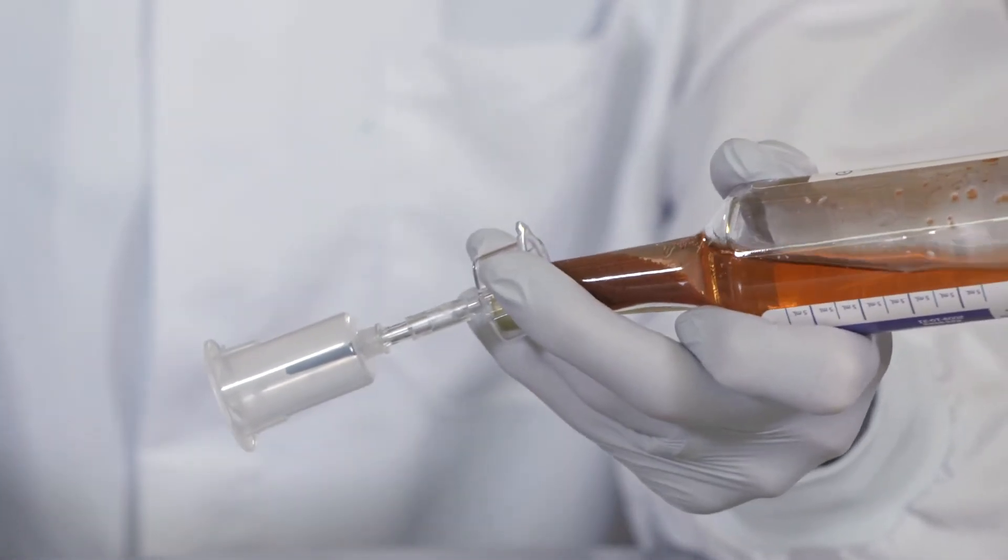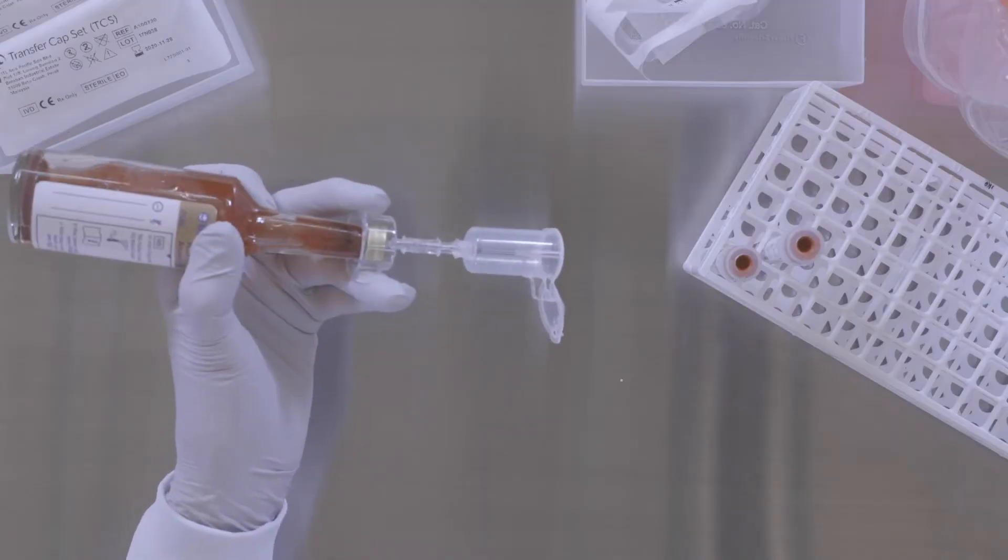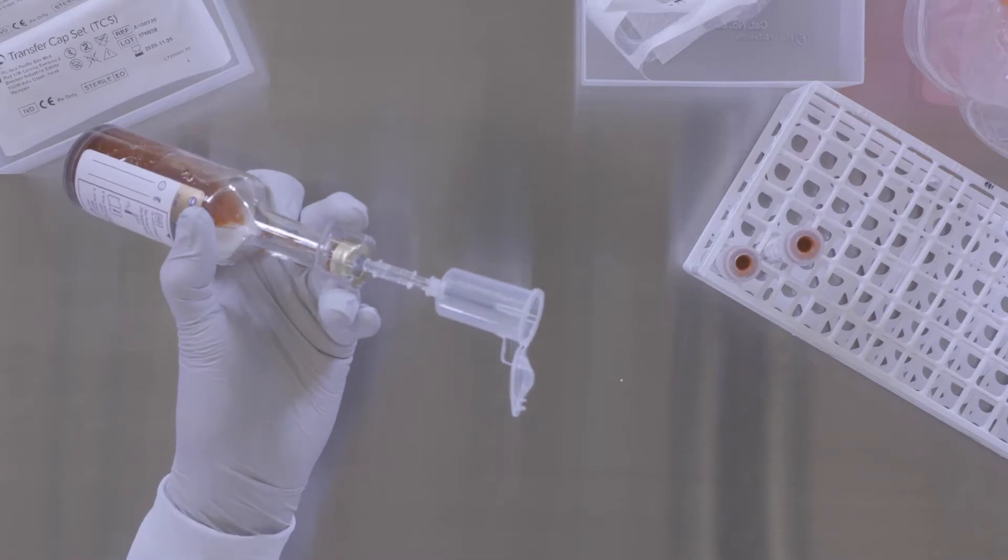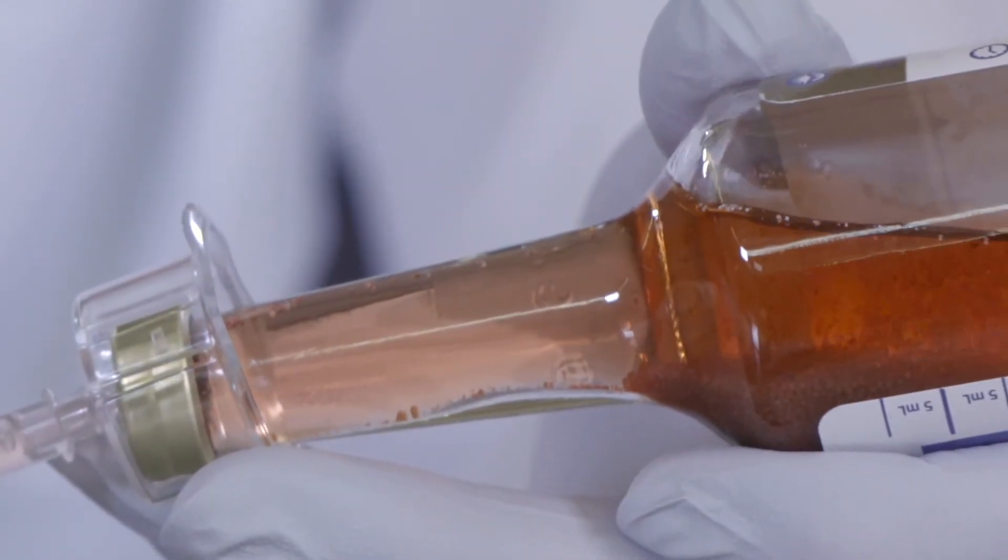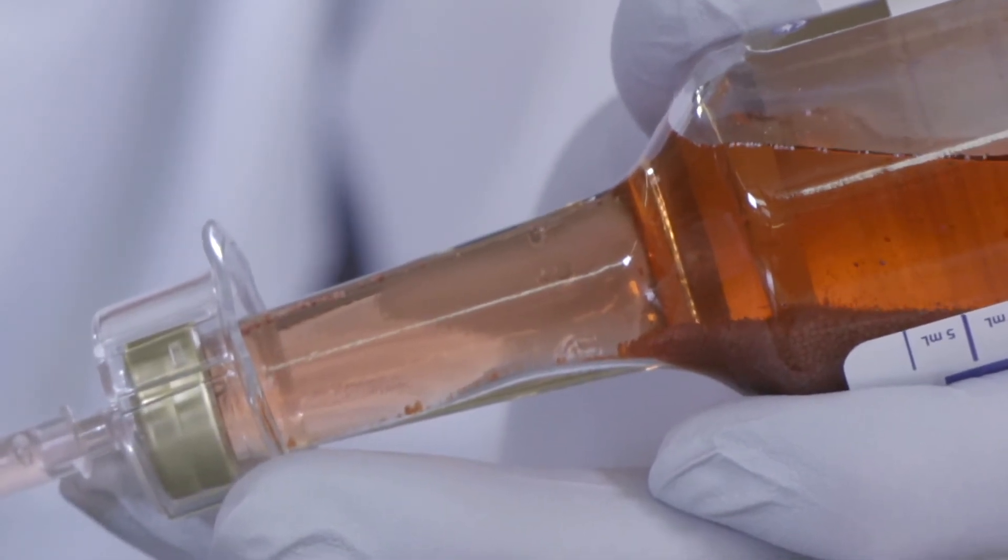If the resin beads obstruct the transfer capset piercing tip, try tilting the bottle back and forth to move the resin beads away from the piercing tip. Once resin beads have settled, tilt the bottle at an approximate 45 degree angle so resin beads gather along the side of the bottle.